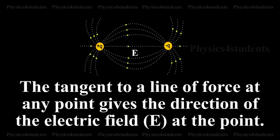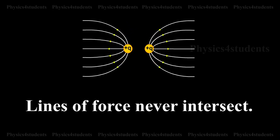The tangent to a line of force at any point gives the direction of the electric field E at that point. Lines of Force never intersect.